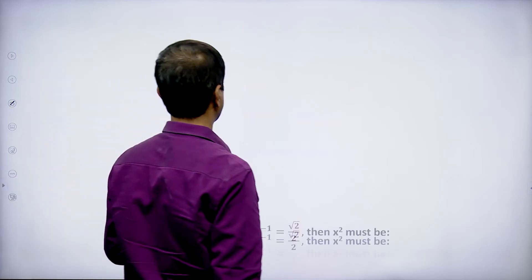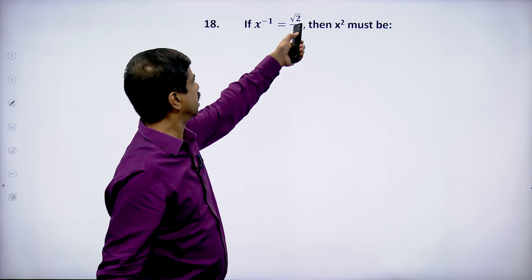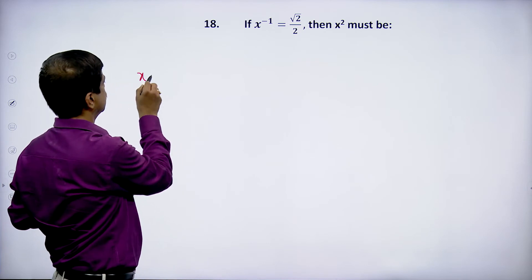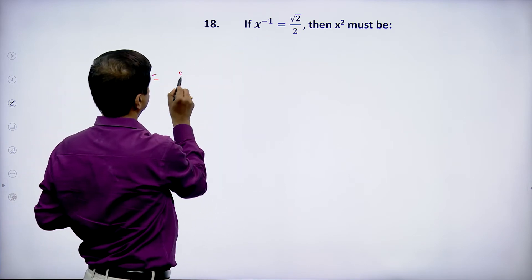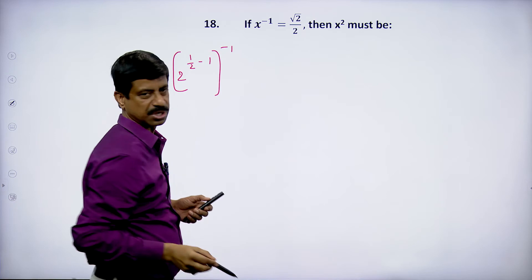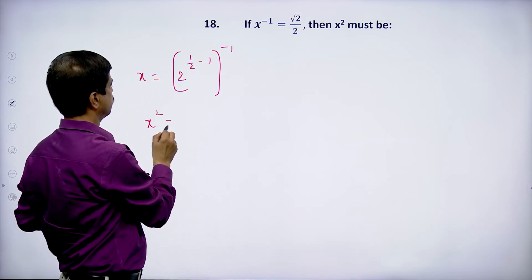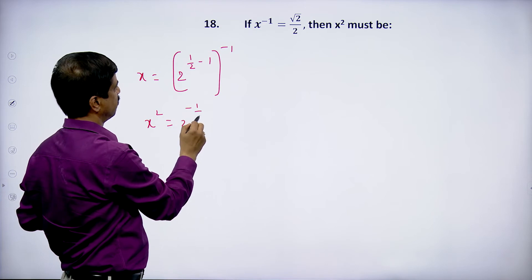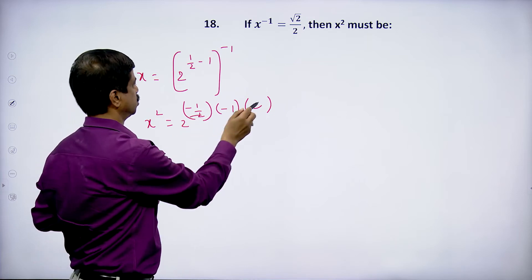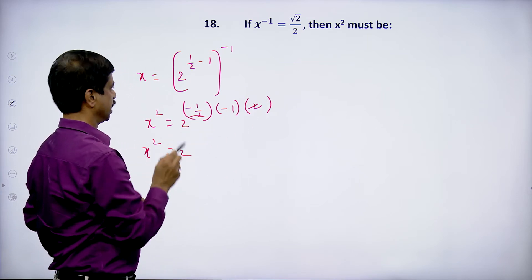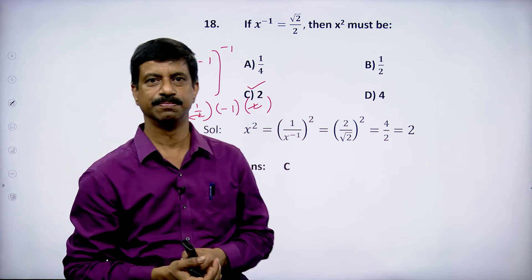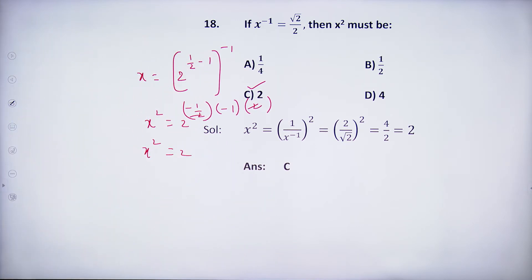Let us move to the next question. x^(-1) = √2/2. So x = (2^(1/2))^(-1) raised to power -1 = 2^(1/2). Squaring both sides: x² = 2^(-1/2 · -1 · 2) = 2. So x² = 2. Option C satisfies.